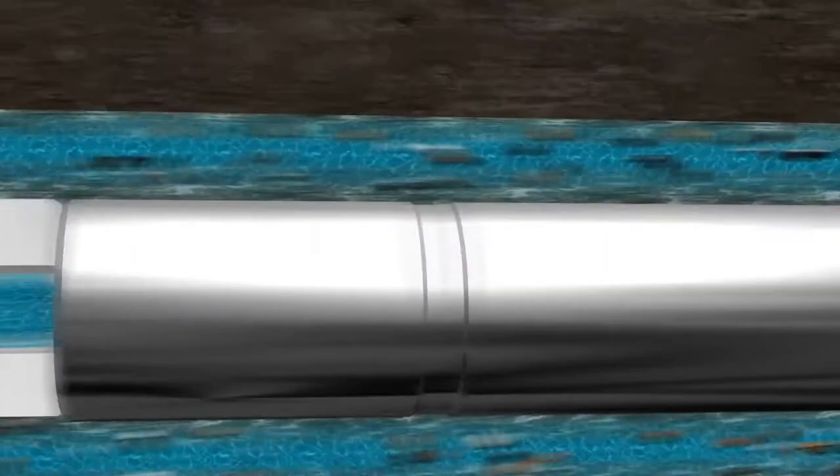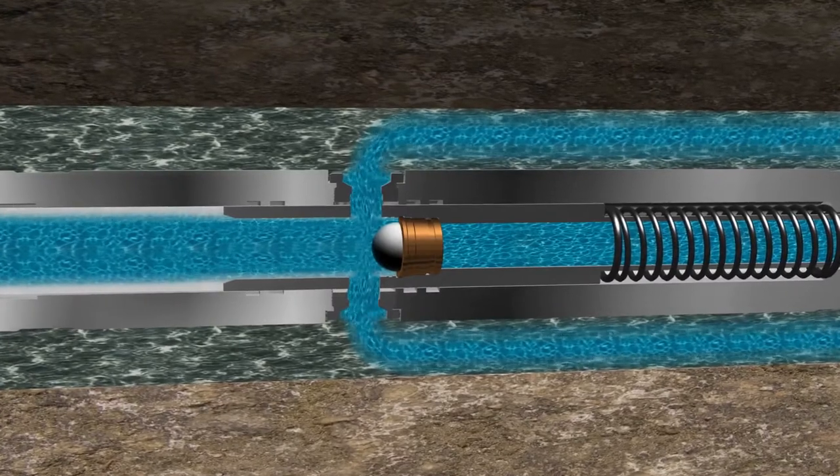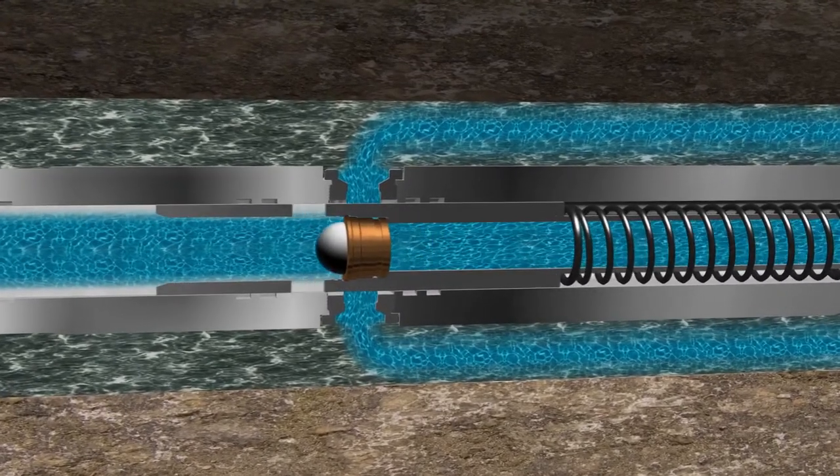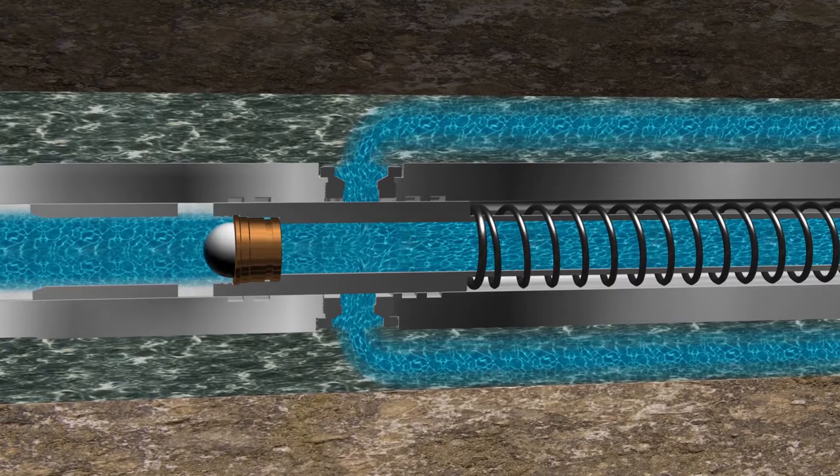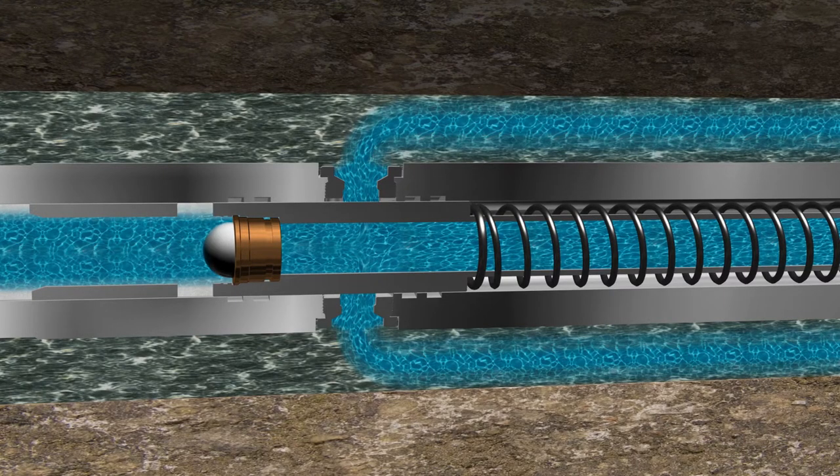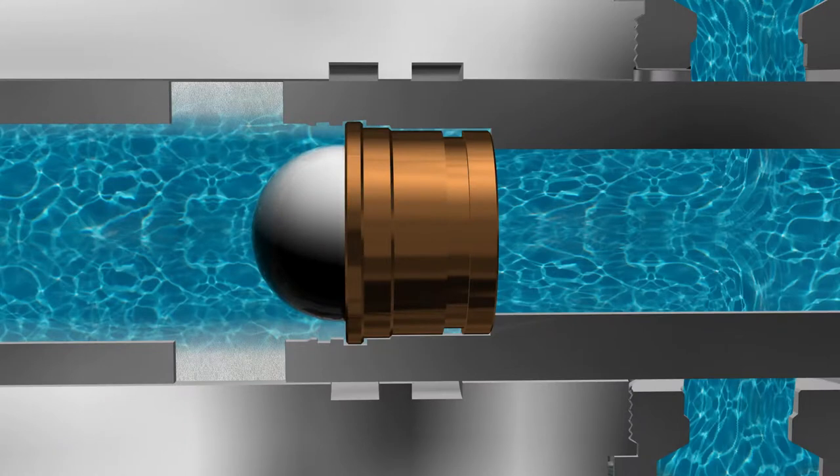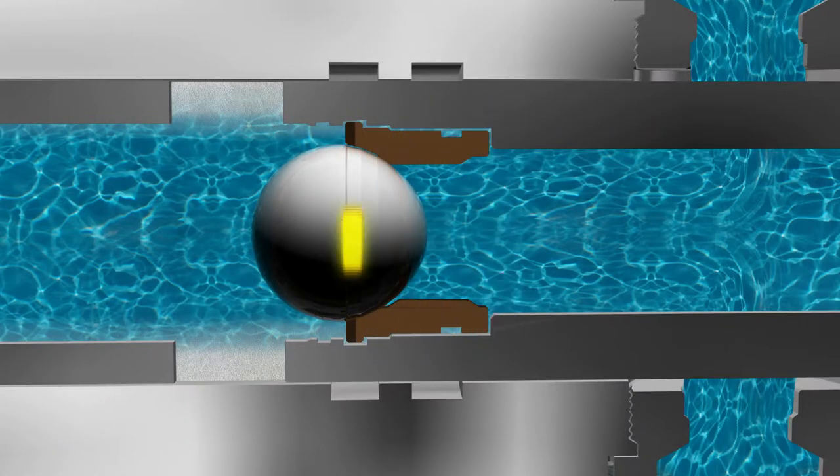A special safety feature of the tool is that whenever pumps are turned off, the sleeve shifts to the closed position and isolates the ports, which eliminates the U-tube effect and assures full well integrity. A proprietary seat design will keep the PBL activation ball in place when the pumps are turned off.